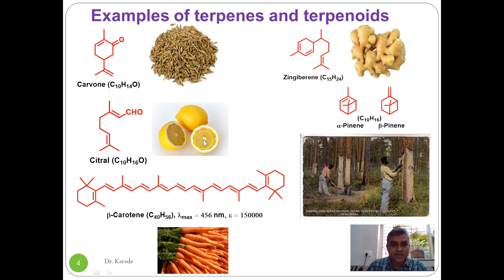The pleasant smell of lemon is due to the presence of a terpene called citral. Citral is an alpha-beta unsaturated aldehyde containing 10 carbon atoms.